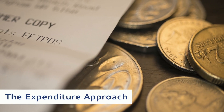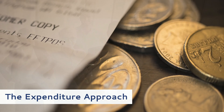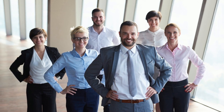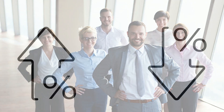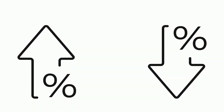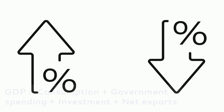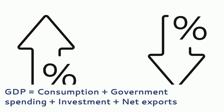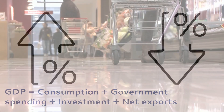The expenditure approach, also known as the spending approach, calculates spending by different groups that participate in the economy. It can be calculated using the following formula: GDP equals consumption plus government spending plus investment plus net exports.